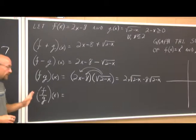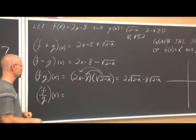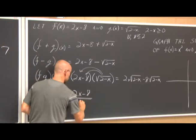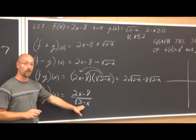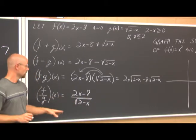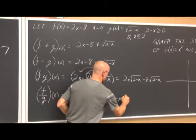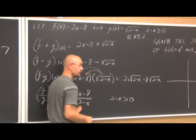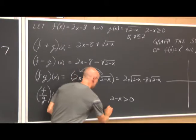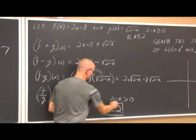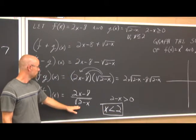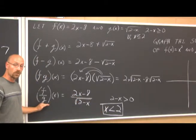For f divided by g of x, we have (2x minus 8) over the square root of (2 minus x). This is where we must pay attention to domain. We already know 2 minus x must be greater than or equal to zero, but now that it's in the denominator, it cannot equal zero either. So we require 2 minus x to be strictly greater than zero — removing the equal sign. Solving: x must be less than 2. This is our new domain, and it differs from the original: x cannot equal 2 because that makes the denominator zero and the expression undefined.